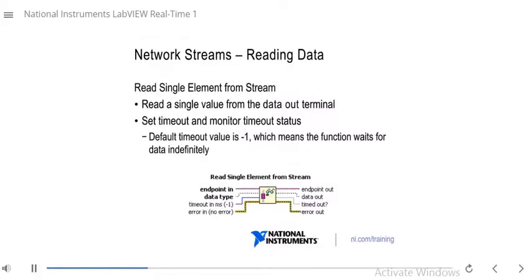On the reader endpoint side, you can use functions to read elements from the network stream. To read one element at a time, use the read single element from stream function. You can set a timeout here as well — the default is negative one, meaning the function waits indefinitely for an element to be available. You can also monitor the timeout status as one of the outputs.